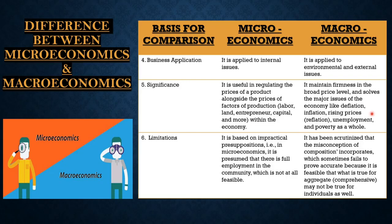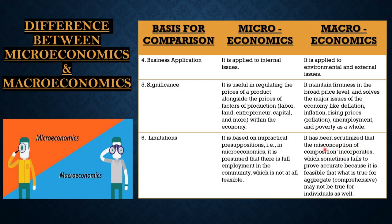The last base is limitation. In microeconomics, it is based on impractical presuppositions — for example, it is presumed that there is full employment in the economy, which is not at all feasible. On the other hand, in macroeconomics, the fallacy of composition is incorporated, which sometimes fails to prove accurate because what is true for the aggregate may not be true for individuals as well.